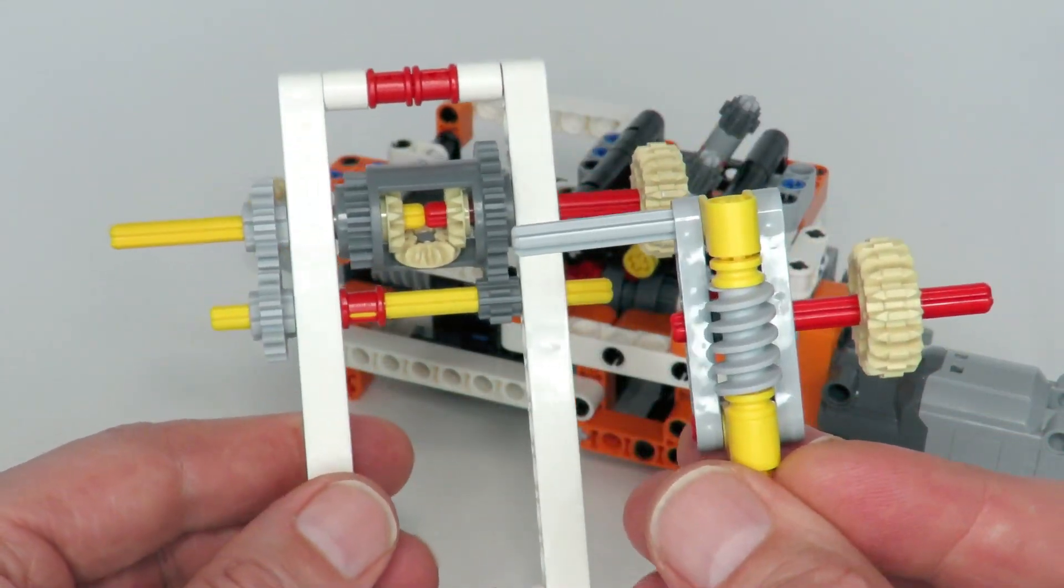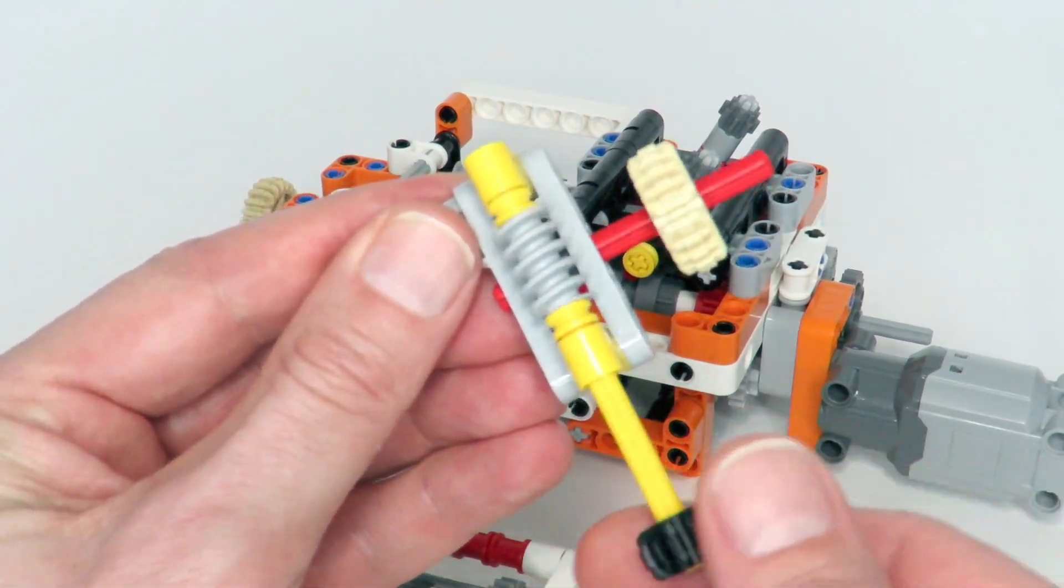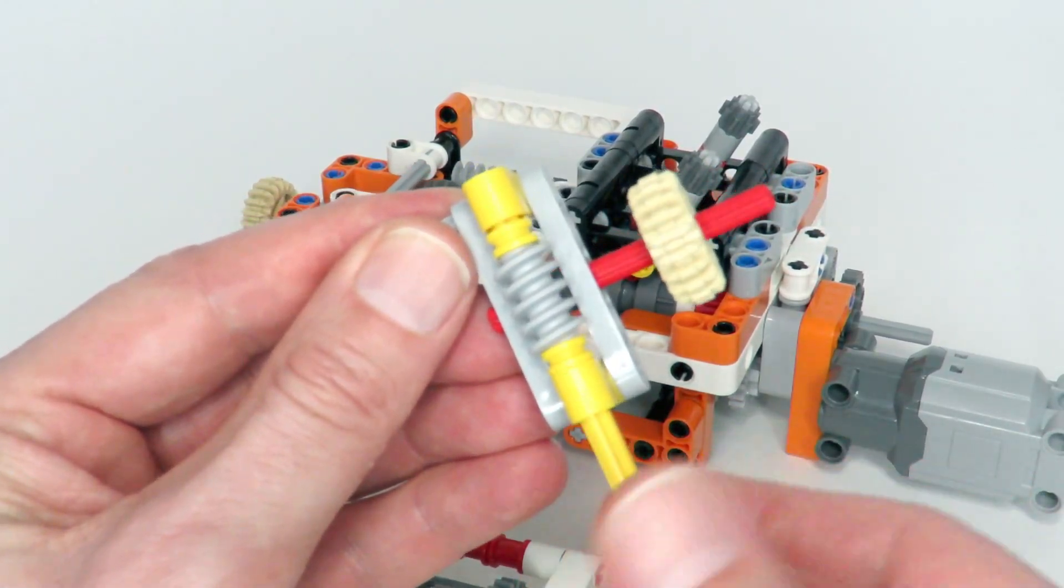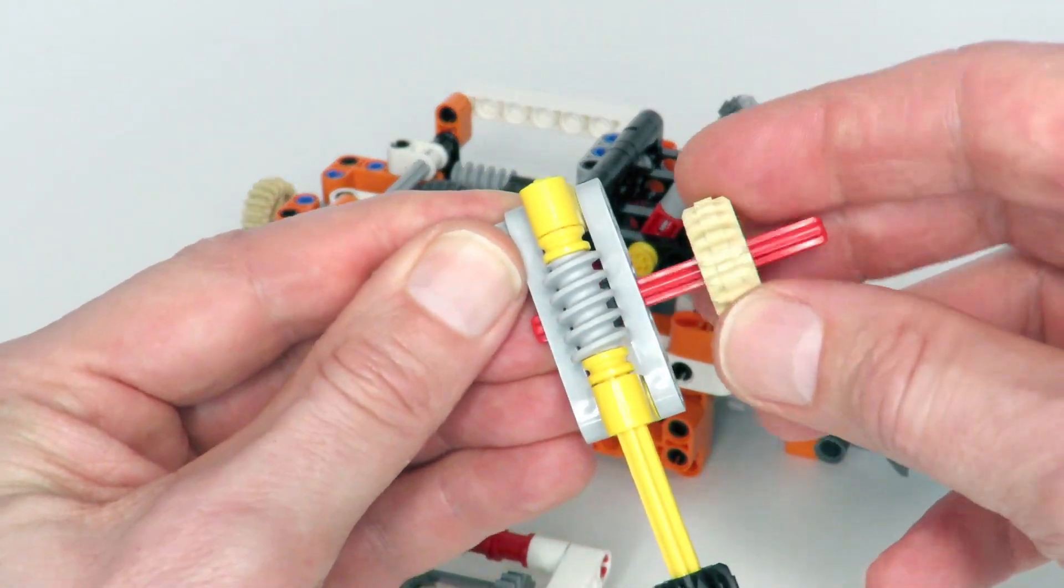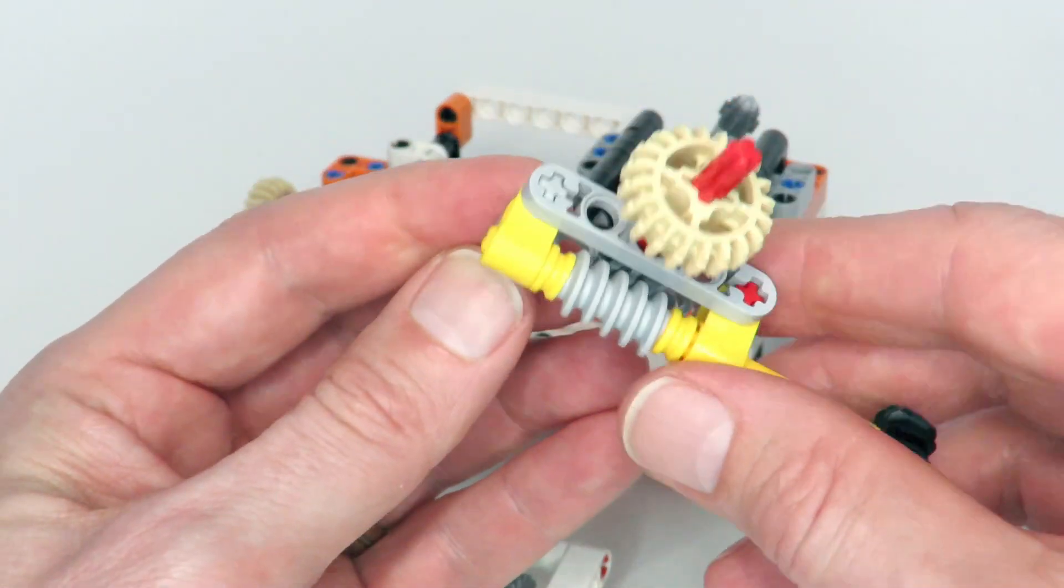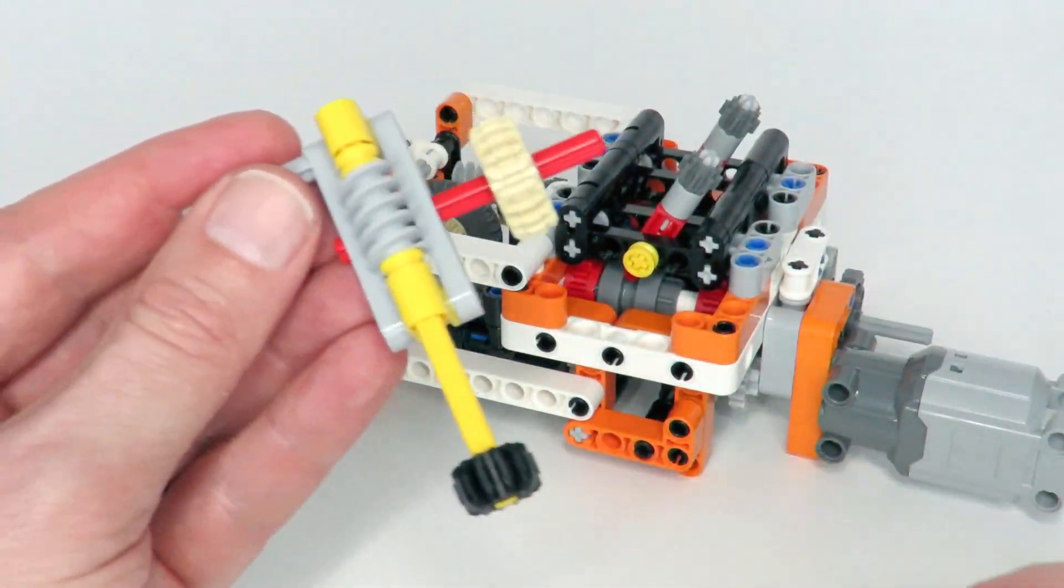This is actually a very similar mechanism—has the same properties. So in this case I can rotate the yellow axle and that will cause the red axle to have the output. However, I can't rotate the red simply because of the structure of a worm mechanism.